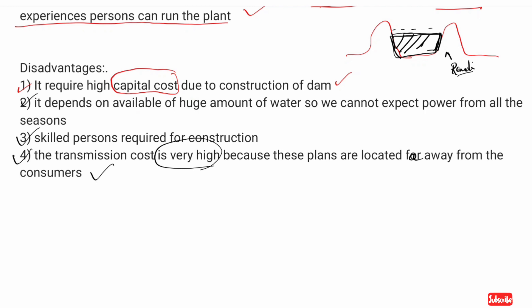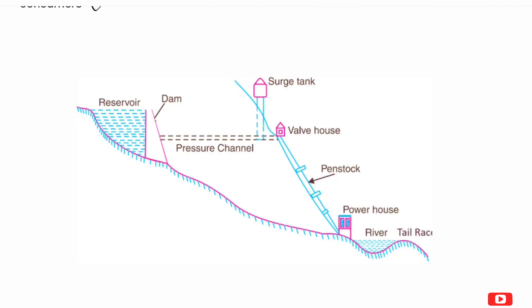That covers the advantages and disadvantages of the hydroelectric plant. Now looking at the schematic diagram: water is stored in a dam, and the storage area is called the catchment area. From the dam, water flows through a pressure channel. The valve house controls the opening and closing of the water flow.